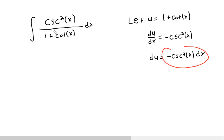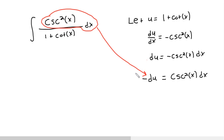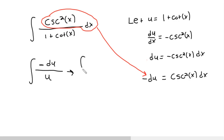We're getting somewhere. I took the derivative and multiplied by dx, and this is in my original integral because I let u equal that portion, and its derivative is in my integral. But notice this is a positive cosecant squared x dx in the integral, while here it's negative. So I'm going to divide both sides by negative 1, giving: negative du equals cosecant squared x dx.